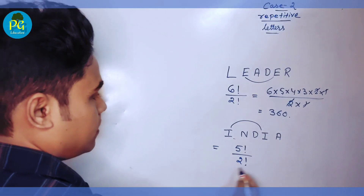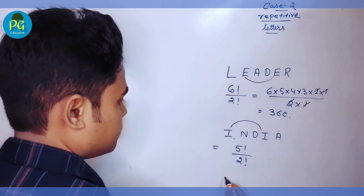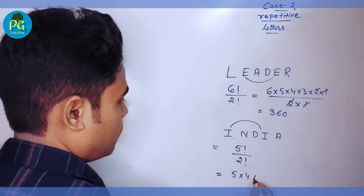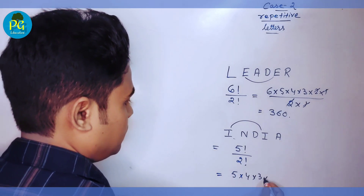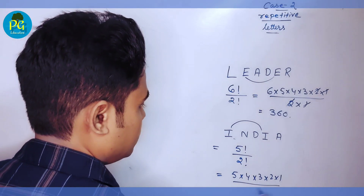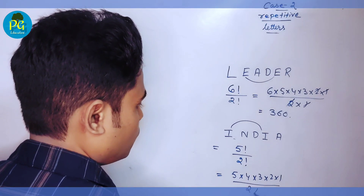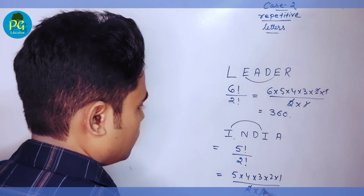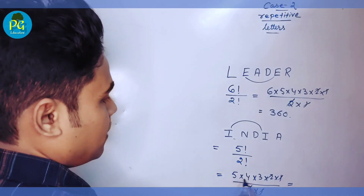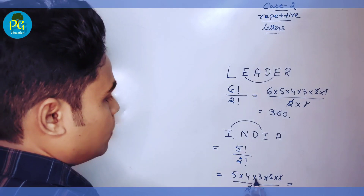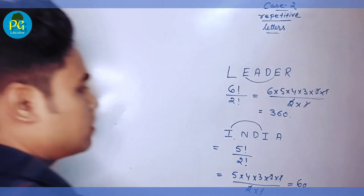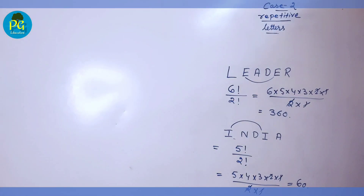For INDIA: there are 5 letters and I is repeated twice, so it is 5!/2! = (5 × 4 × 3 × 2 × 1) ÷ (2 × 1) = 60. Understood?